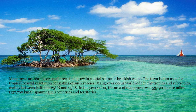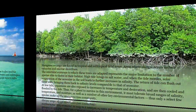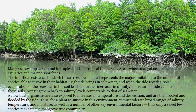In the year 2000, the area of mangroves was 53,190 square miles, or 137,760 square kilometers, spanning 118 countries and territories. Mangrove swamps are found in tropical and subtropical tidal areas. Areas where mangroves occur include estuaries and marine shorelines. The intertidal existence to which these trees are adapted represents the major limitation to the number of species able to thrive in their habitat.